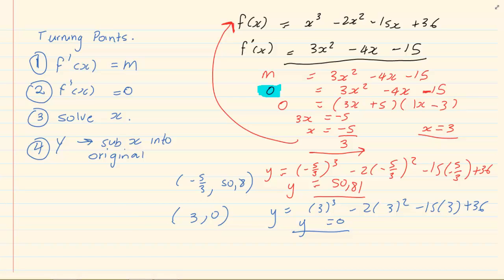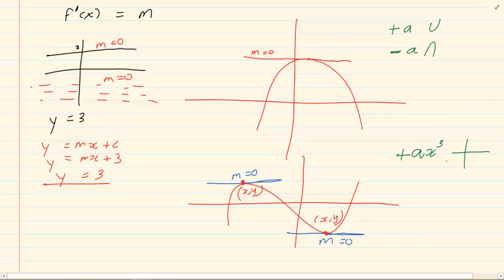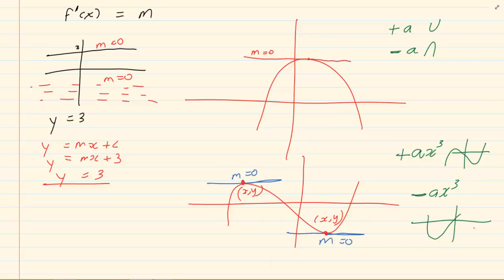Now remember, just like how you had learned — a positive a in a parabola gives you a happy face and a negative a gives you a sad face. In calculus graphs we have a similar thing. A positive a with your x cubed means you're going to get a graph that goes sad and then happy. You start off sad but at the end you end off happy. We always read from left to right. And a negative a x cubed is going to give us a happy and then a sad graph.